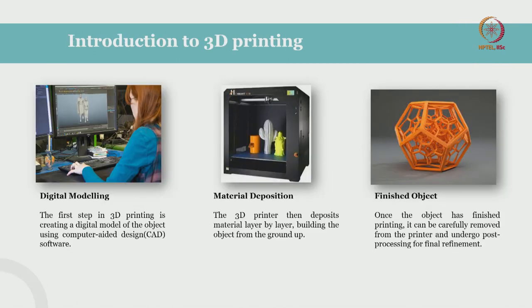How is a 3D printed object made? There is a list of steps or procedures you need to follow to make an object via 3D printing. First, of course, you need to make a model. For 3D printing, if you need to make a model from scratch, you need to use CAD software, then convert that model into machine-readable languages, and depending on which technology you are using, process the object accordingly for end application. We will discuss more about the workflow.